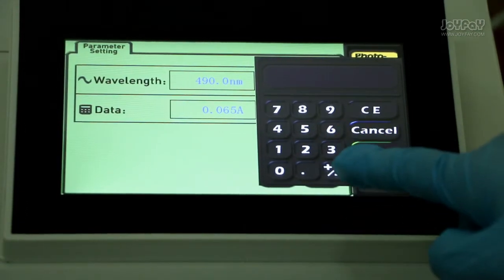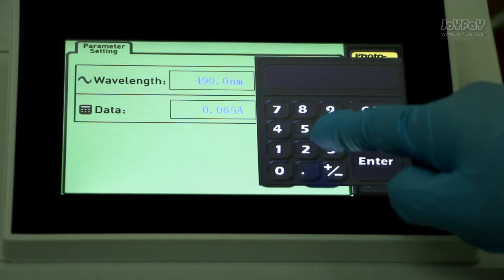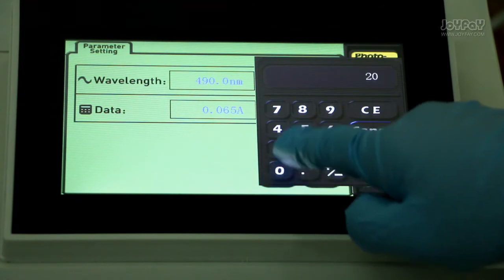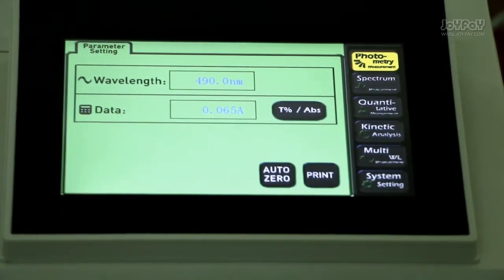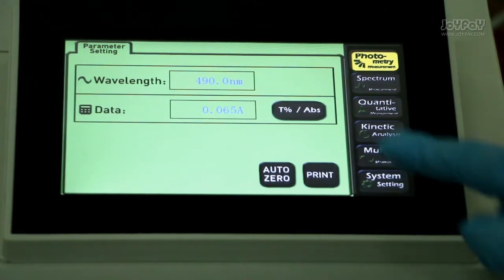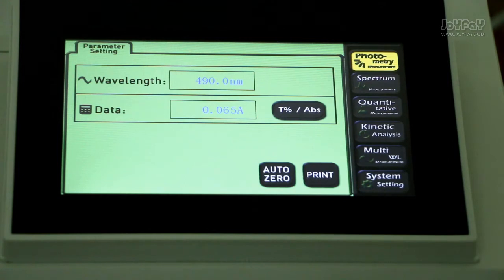The range of the machine is from 190 to 1100 nm. If the input value is not appropriate for the instrument parameter, the display will show out of range to indicate wrong input. Then input a correct value.